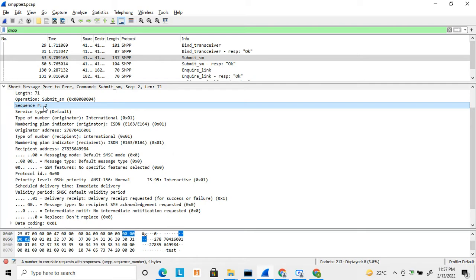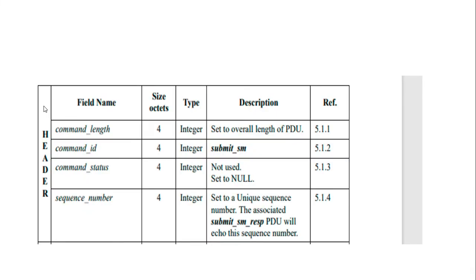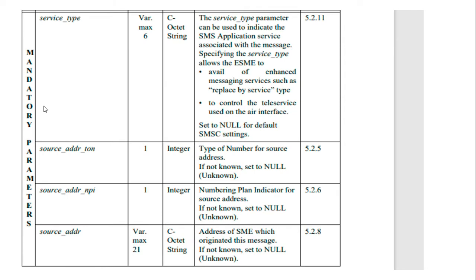Next is the service type. The service type is also set to null by default. There are some other possible values, but by default the ESME sets it to null to use the default SMS settings.